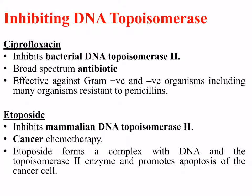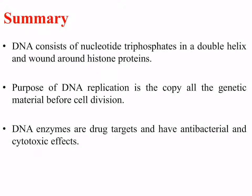A second drug target is DNA topoisomerase. Two drugs able to inhibit DNA topoisomerase include ciprofloxacin — an antibiotic that targets bacterial topoisomerase — and etoposide, used in cancer chemotherapy, which inhibits human DNA topoisomerase. In summary, DNA consists of nucleotides in a double helix whose structure is wound tightly around histone proteins. DNA replication copies all the genetic material before cell division. Finally, DNA enzymes can act as drug targets and have antibacterial and cytotoxic effects in cancer chemotherapy.